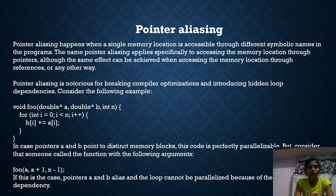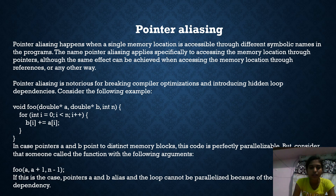Consider the following example: for double a and double b, int n, for int i equals 0 and i less than n, i++, then b[i] plus equals a[i]. In the case where pointers a and b point to two distinct memory blocks, this code is perfectly parallelizable. But if someone calls the function with the arguments a and a+1 or n-1, then pointers a and b alias and the loop cannot be parallelized because of the dependency.